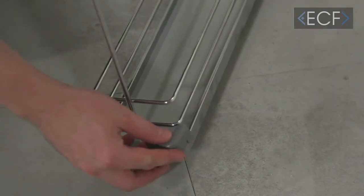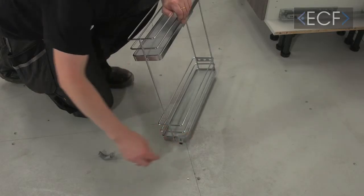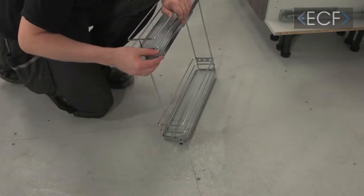Take the frame and put the rear corner brackets on it. Just clip them over, and do the same for the top one.